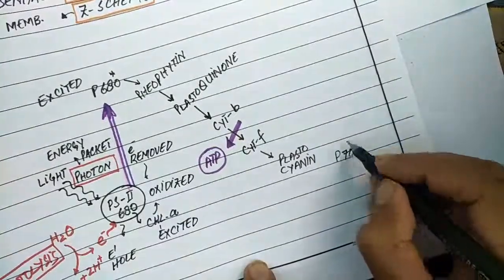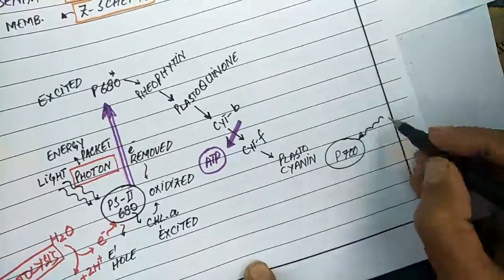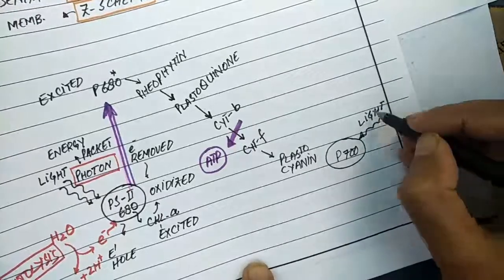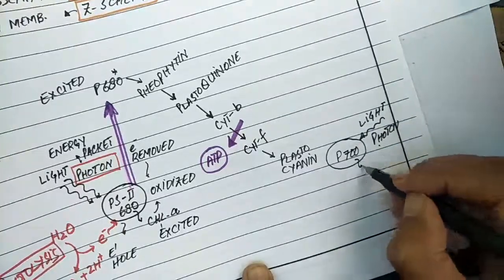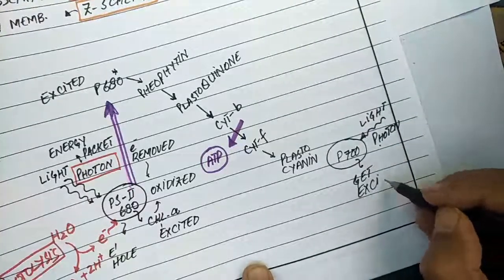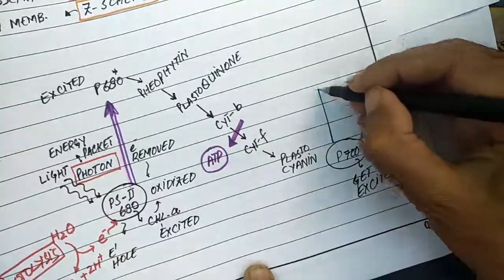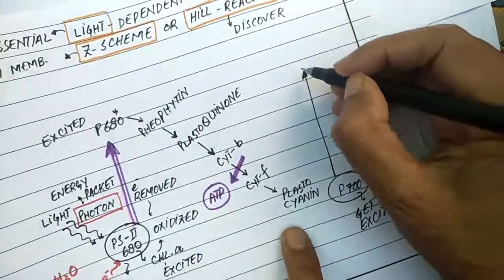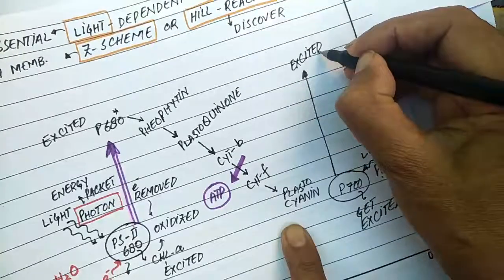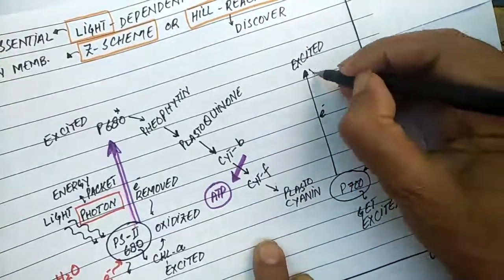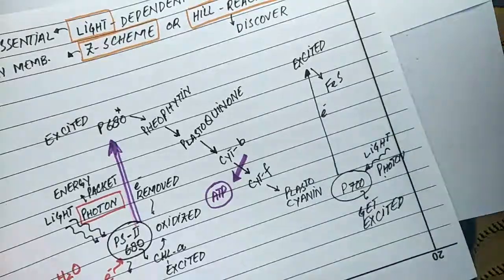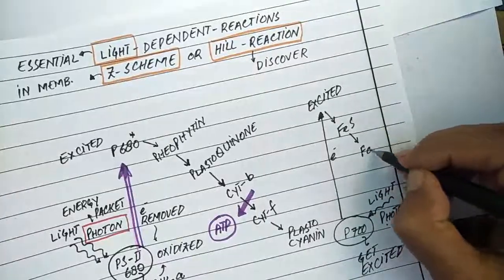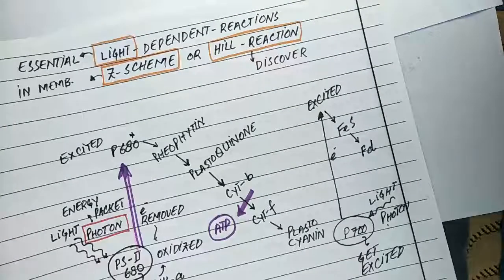At the same time, chlorophyll molecules at P700 absorb red light of 700 nanometers and get excited. The electrons removed from P700 are absorbed by iron-sulfur protein, then transferred to ferredoxin.